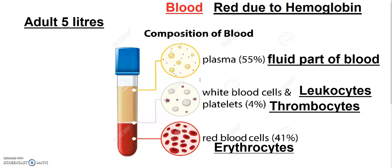Plasma forms 55% of the fluid part of blood. Plasma is composed of 90% water, some plasma proteins at 7–8%, and some organic salts. Blood plasma contains an anticoagulant which prevents blood from coagulation. Coagulation means blood clotting.